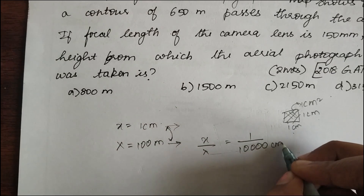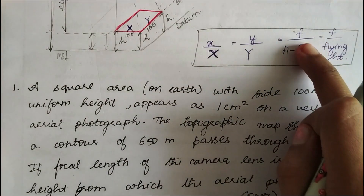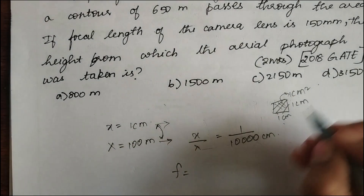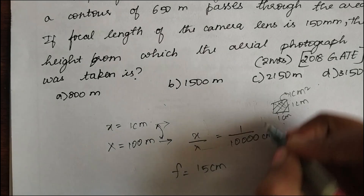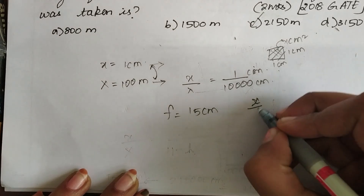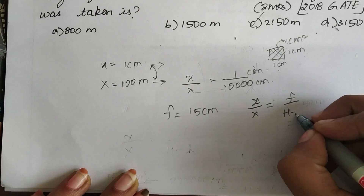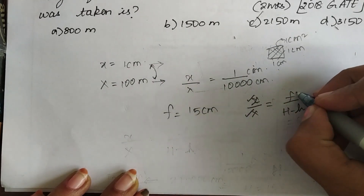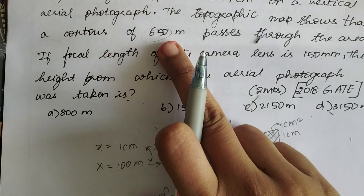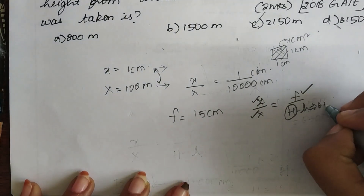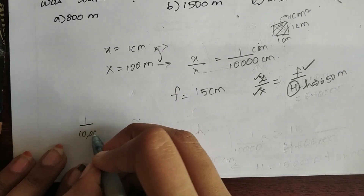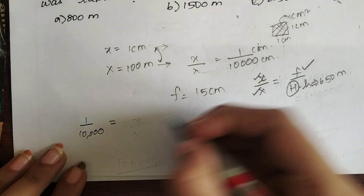The focal length is 150 mm, written as 15 centimeters. Now everything is in centimeters. The formula is small x divided by capital X equals f divided by (H minus h). I have small x, capital X, and f. I need to find H, and the contour height h is given as 650 meters.